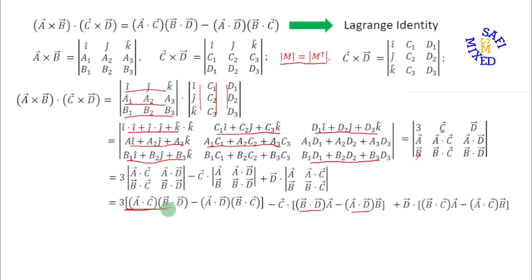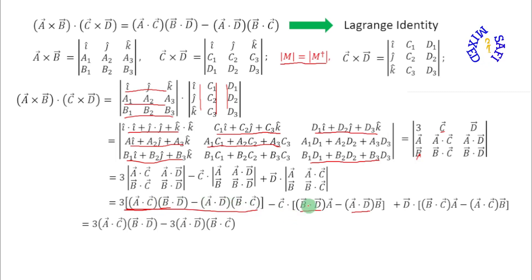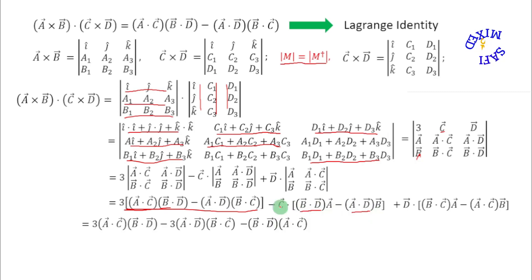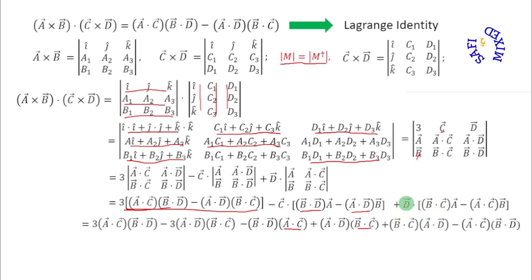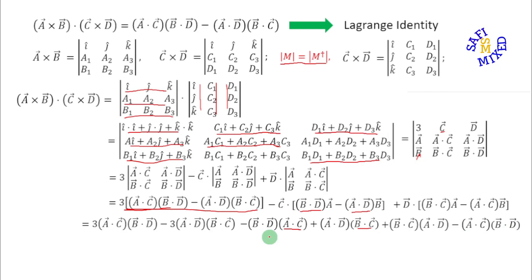I open each term: 3 multiplied by the first term, 3 multiplied by the second term, and put them in this form. Then vector c multiplies scalarly with a to write c dot a, and with b to write c dot b. Using the commutative property of the scalar product I write c dot b as b dot c. Similarly d multiplies scalarly with a to write a dot d, and scalarly with b to write b dot d.